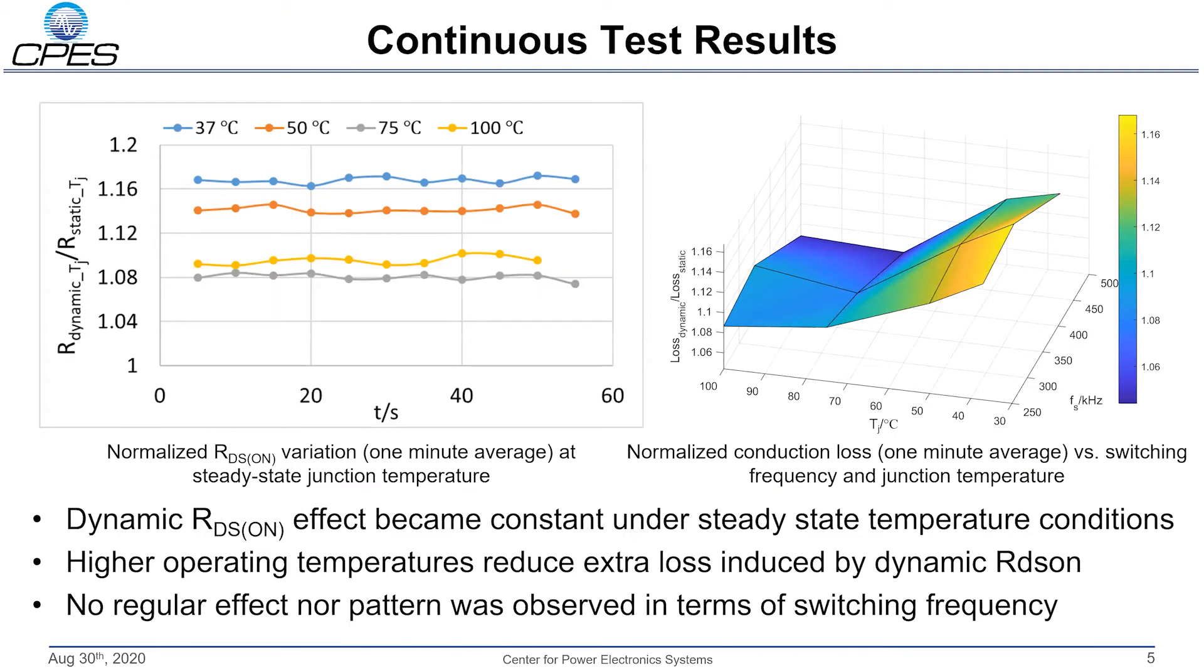This slide shows the results under continuous test. The left figure presents the normalized RDS(ON) values at different temperatures, taken in steady state over the last one minute. It shows how the dynamic RDS(ON) effect becomes constant once the operating temperature reaches steady state.